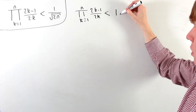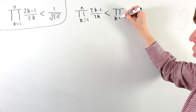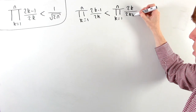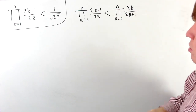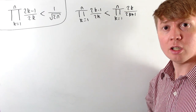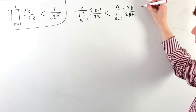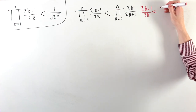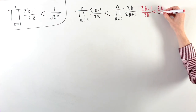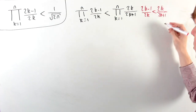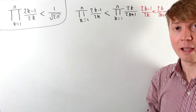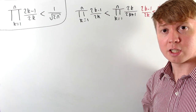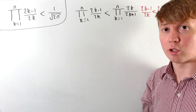This is going to be less than the new product: the product from k=1 to n of the even number divided by the next biggest odd number. This takes advantage of the fact that 2k over 2k+1 is always going to be bigger than (2k−1) over 2k — just as three quarters is less than four fifths, and five over six is less than six over seven, and so on.